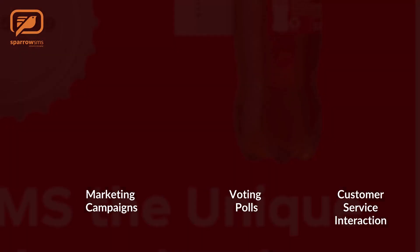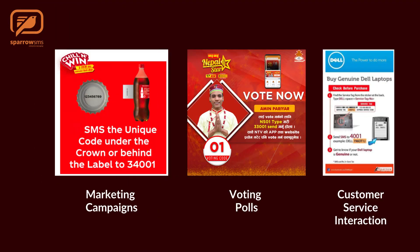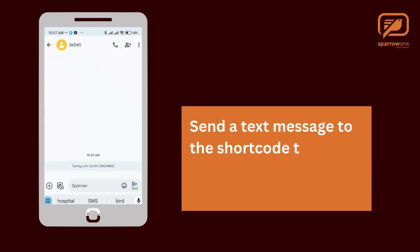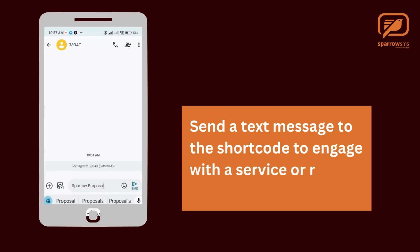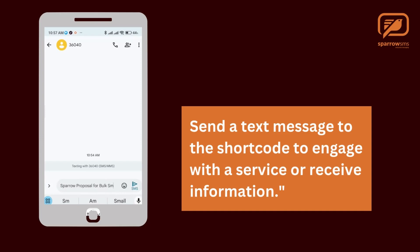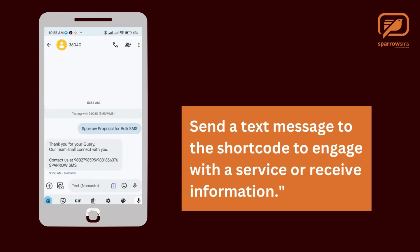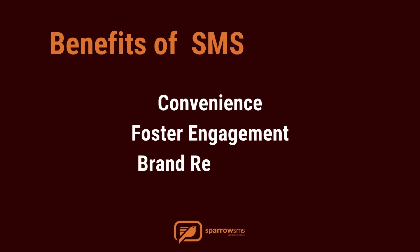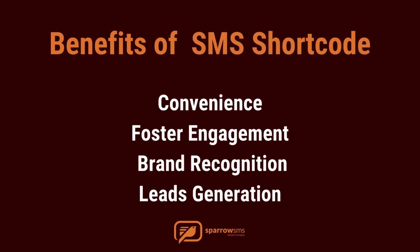SMS shortcodes are employed in marketing campaigns, voting polls, customer service interactions, and more. Users simply send a text message to the shortcode to engage with the service or receive information. Opting into SMS services via shortcodes is usually done by sending a specific keyword to the shortcode.